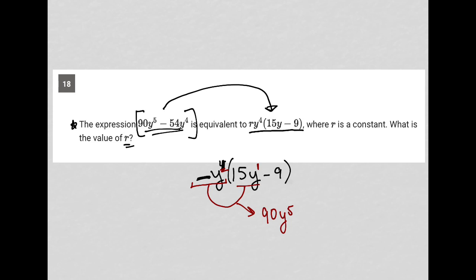So it's really just a 6 that's necessary here because 6 times 15 is 90.